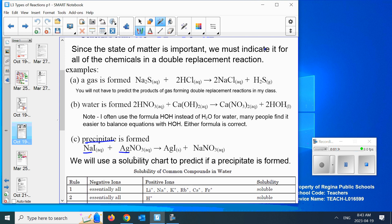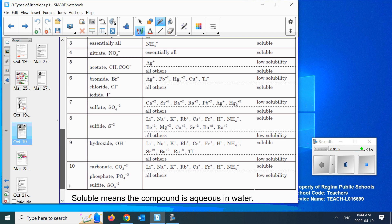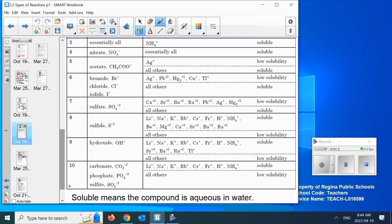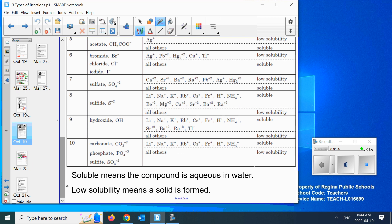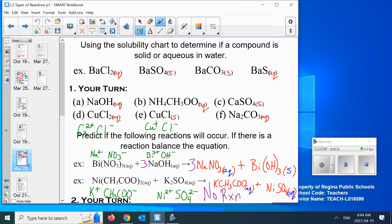One of three things has to happen: gas is formed, water is formed, or a precipitate. We're not going to focus on the gas forming. When H and OH switch places, you get H-O-H, water. I mentioned that I often use H-O-H instead of H₂O. Precipitate is a million dollar word for solid. We will use a solubility chart to predict if a precipitate is formed.